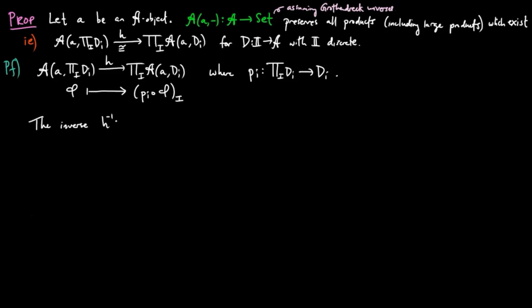We can easily obtain an inverse to H by assigning the collection of morphisms psi sub i to psi, where psi is induced by the universal mapping property of the product in A.